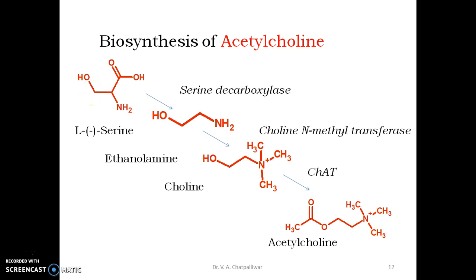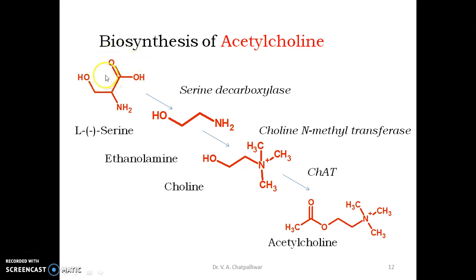The carboxyl group is not present in the final product acetylcholine, so the first step is to remove this carboxyl group. This is accomplished by the enzyme serine decarboxylase, which generates ethanolamine.